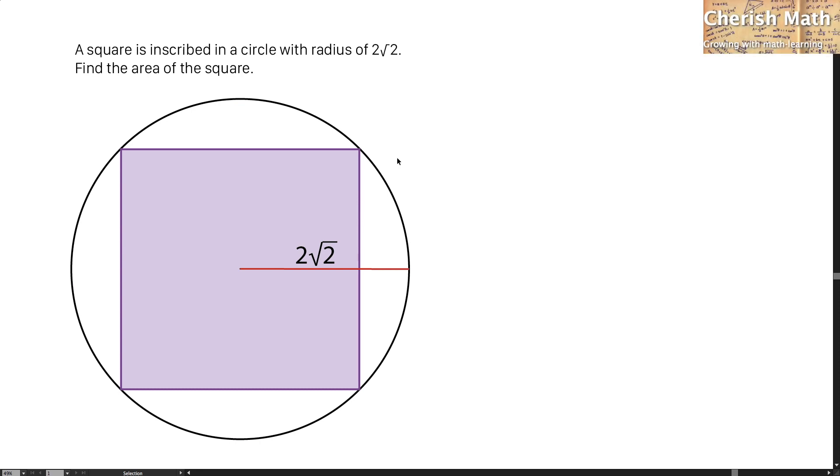Say hi from Charish Math and this is the problem. A square is inscribed in a circle with radius of 2 times the square root of 2. Find the area of the square.